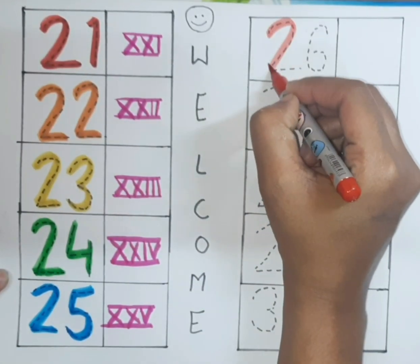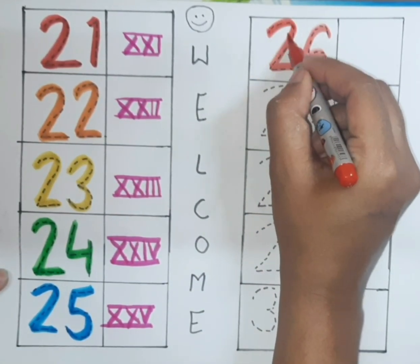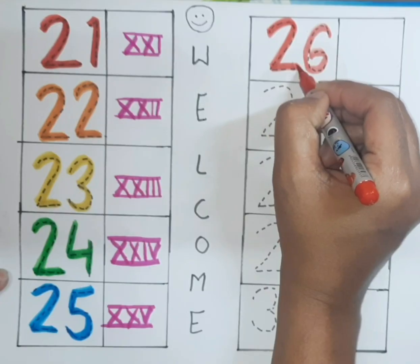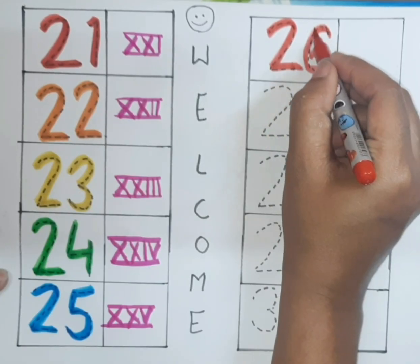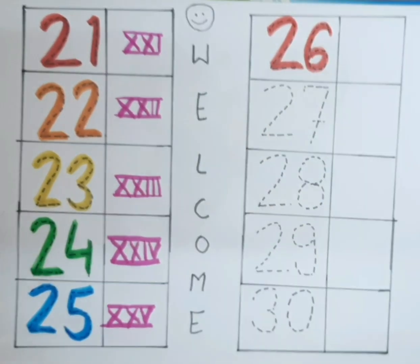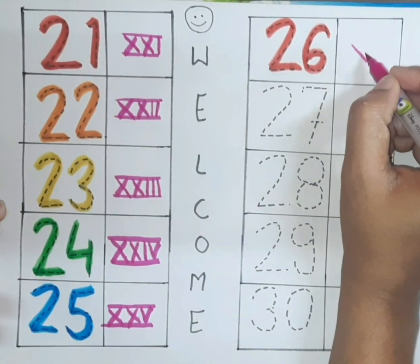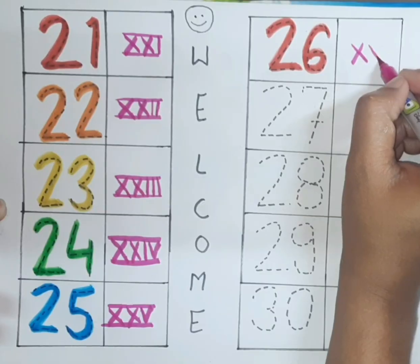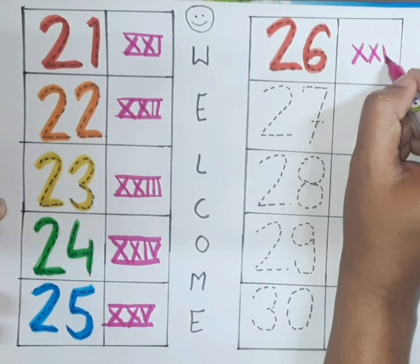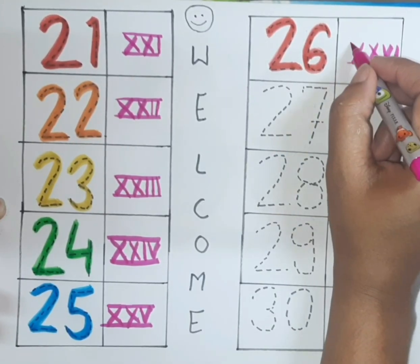Now start twenty six. Twenty six, twenty six. In numbers, twenty six. In roman number it is double X, V, I.